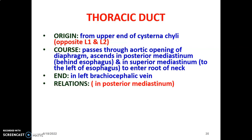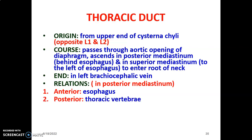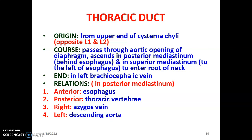The relations of the thoracic duct in the posterior mediastinum: the esophagus is anterior to the thoracic duct, the thoracic vertebrae are posterior, to the right of the thoracic duct is the azygos vein, and to the left is the descending aorta.